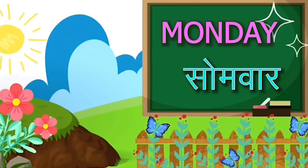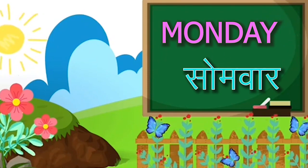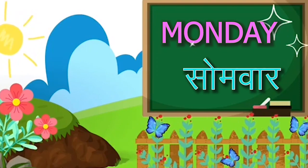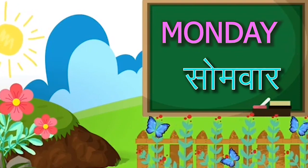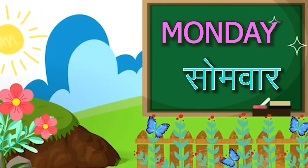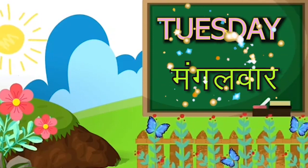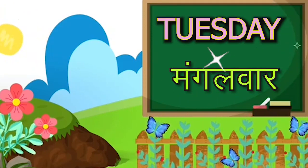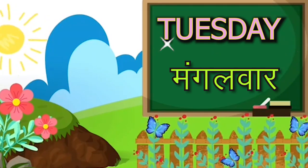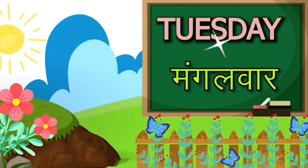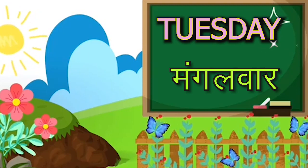The second day of the week is Monday. The spelling of Monday is M-O-N-D-A-Y, Monday. The third day of the week is Tuesday. The spelling of Tuesday is T-U-E-S-D-A-Y, Tuesday.